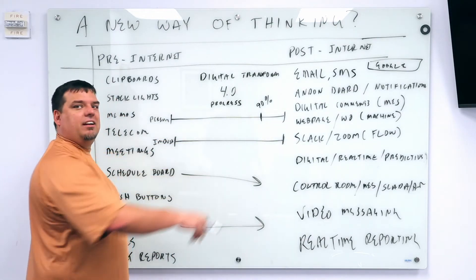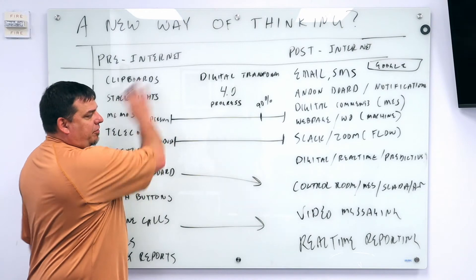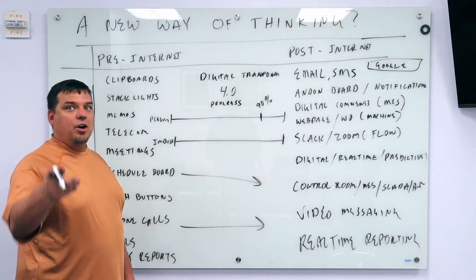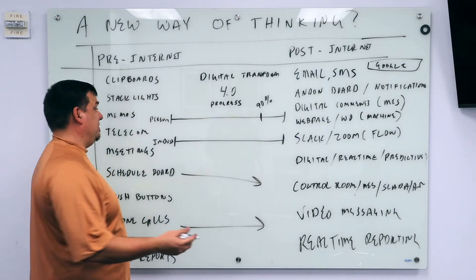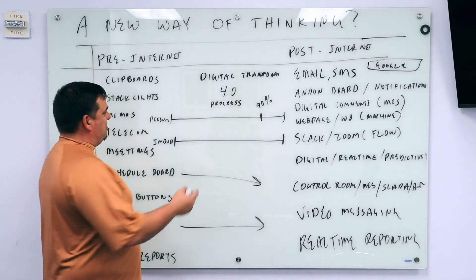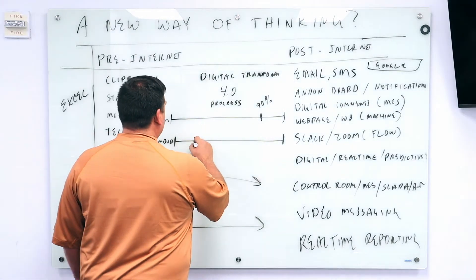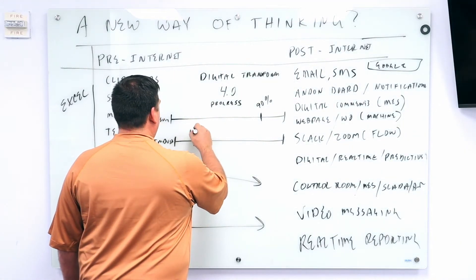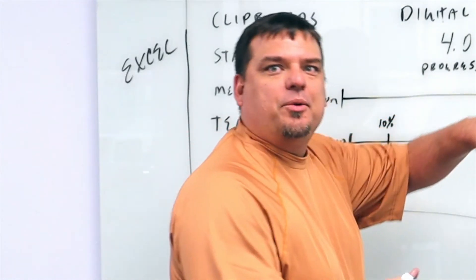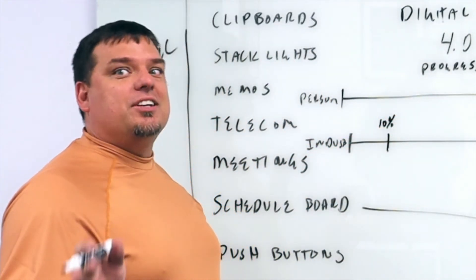What do you think that number is for industry? How many plants have performed this move that you know of? Five percent. I think you're being generous, but we're going to say that industry is 10% of the way there. And that's a generous assessment.